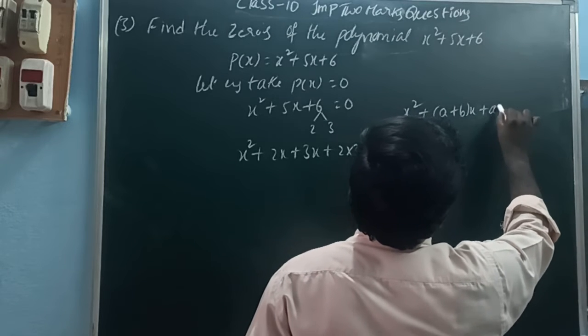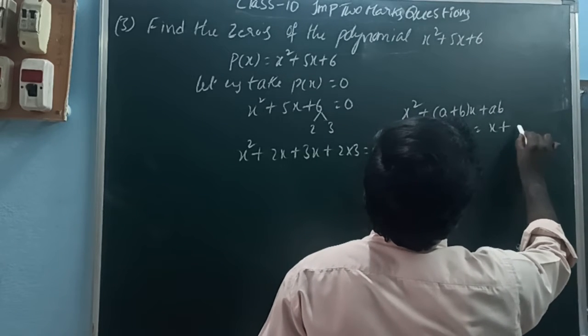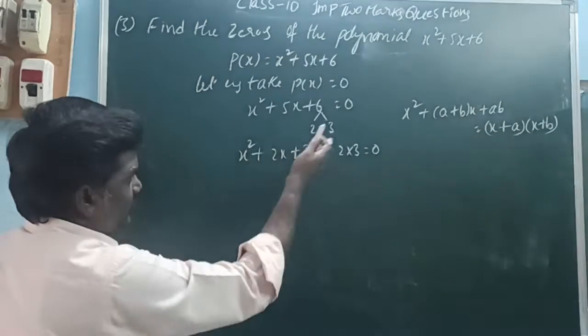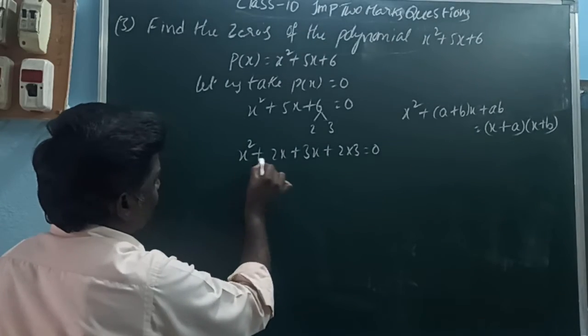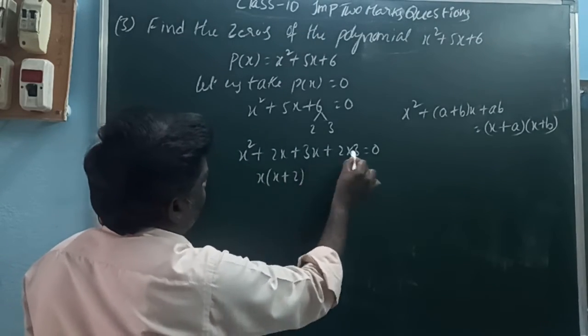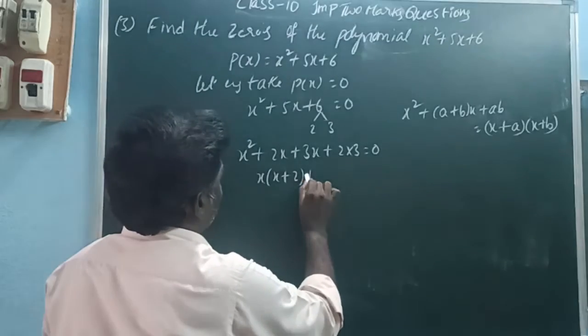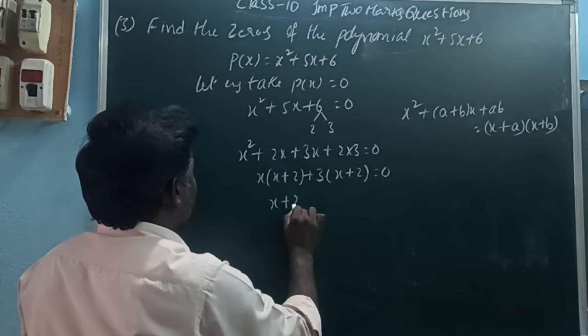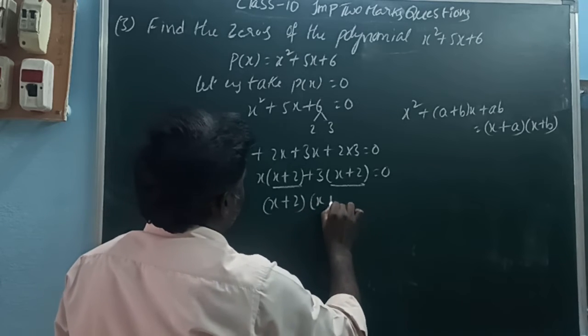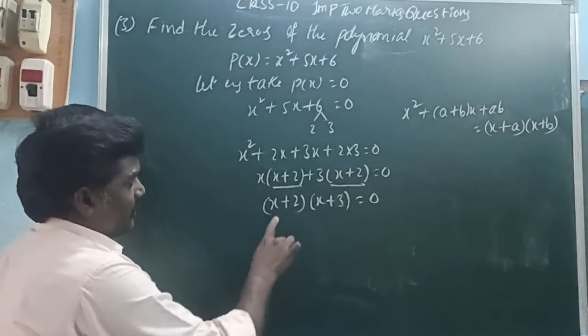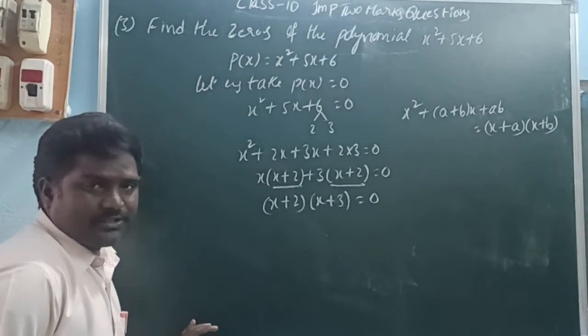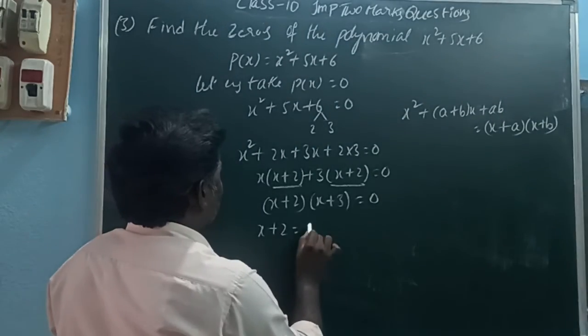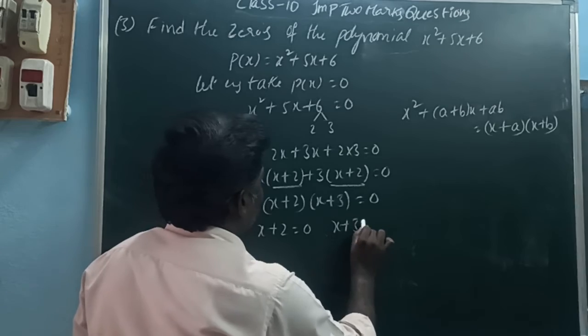In the first two terms, the common factor is x(x + 2). In the last two terms, the common factor is 3(x + 2). Taking the common (x + 2), we get (x + 2)(x + 3) = 0. The product of two polynomials is 0 if the first one is 0, the second one is 0, or both are 0. So x + 2 = 0 or x + 3 = 0, giving x = -2 or x = -3.